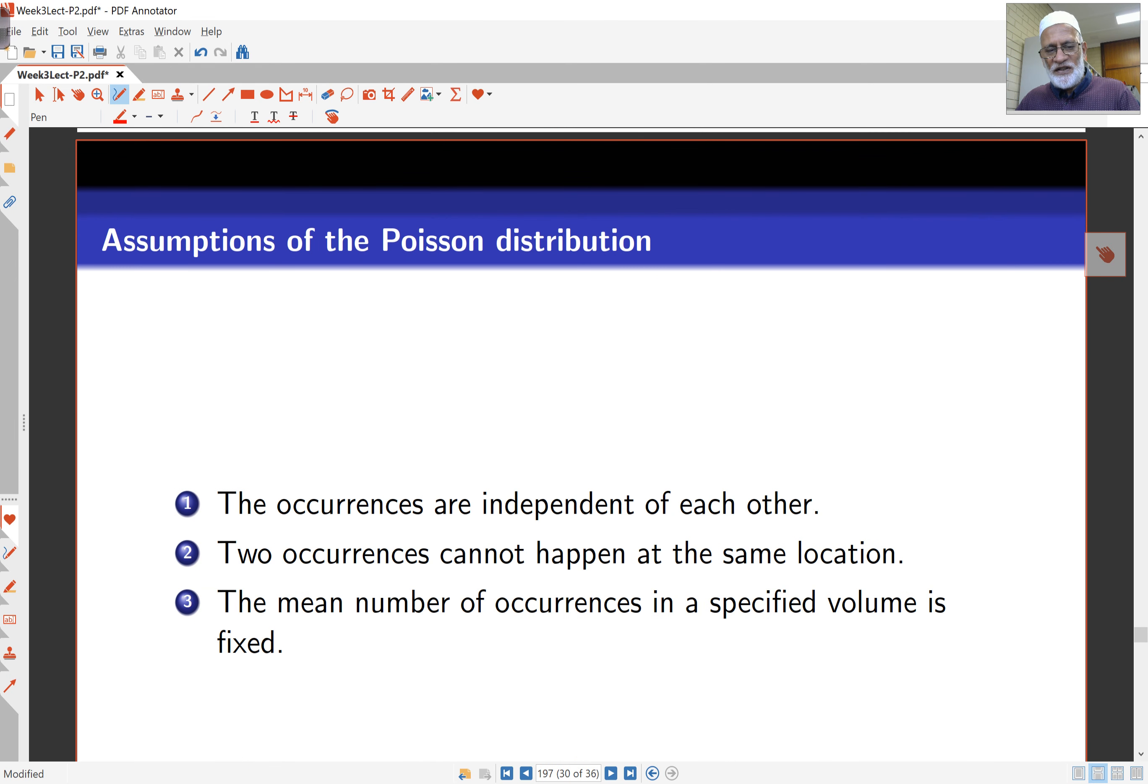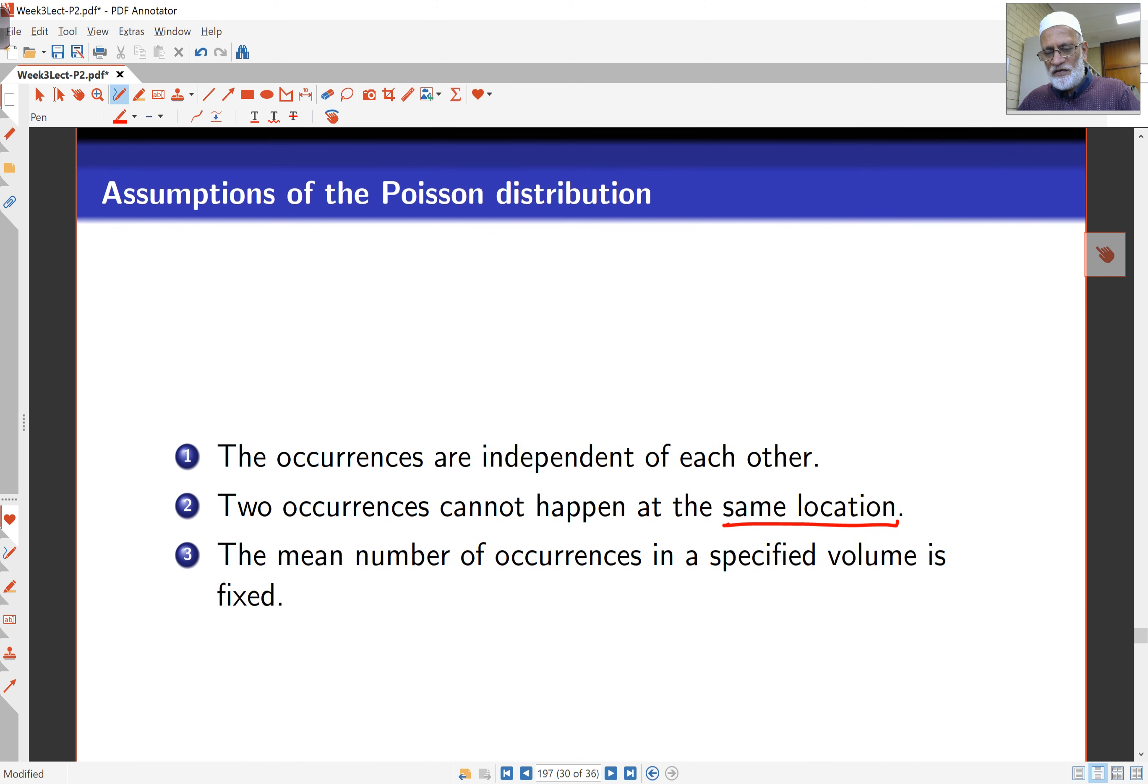The assumptions here are going to be that the occurrences are independent of each other. You can't have two occurrences at the same location, and the mean number of occurrences in a specified volume is fixed. So the mean number is fixed here. So the second one here, same location, means essentially if you're looking at, for example, flaws in stitching in a jean, you can't have two stitching errors at the same time, at the same point. If you're looking at the number of occurrences of a phenomenon in time, you can't have two occurrences at the same point in time.